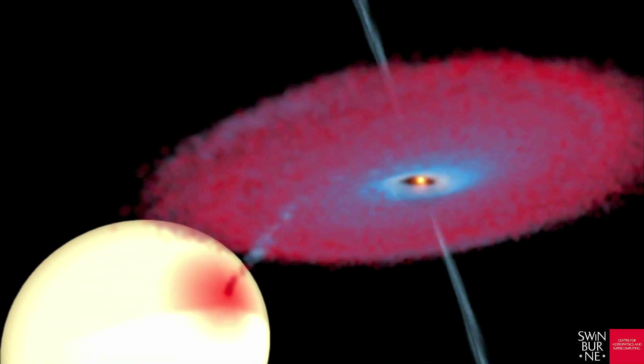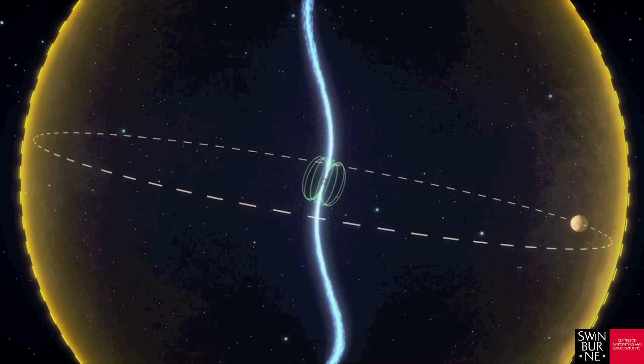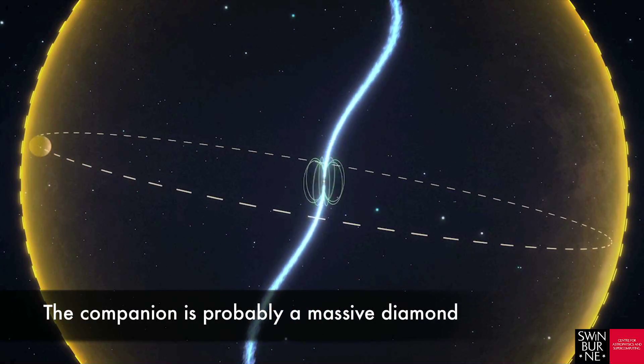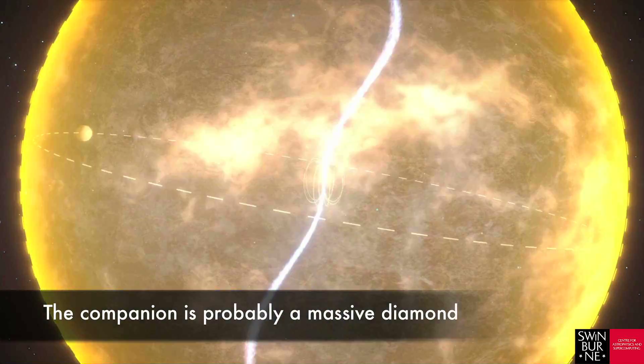The evolutionary history and amazing density of the planet all suggest it is comprised of carbon, i.e. a massive diamond orbiting a neutron star every two hours in an orbit so tight it would fit inside our own sun.